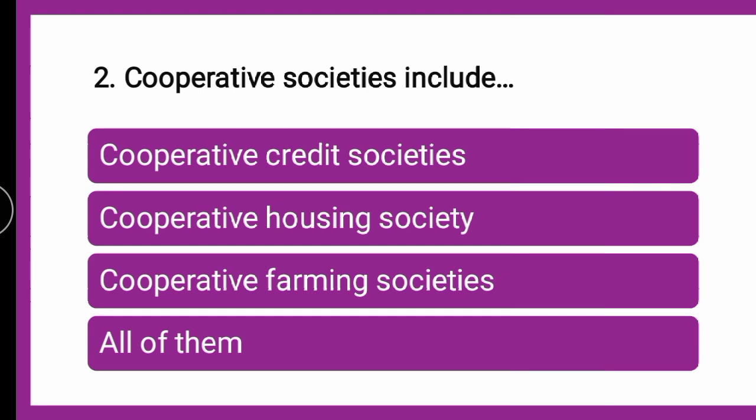For Question 2, put your answer quickly — 2A, 2D, etc. The correct answer for this question is all of them. Cooperative societies include cooperative credit societies, housing societies, as well as farming societies, and there are many more types.